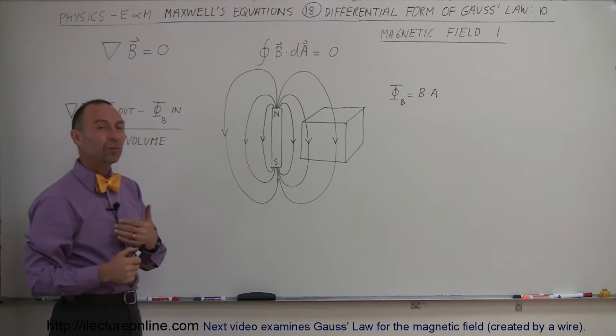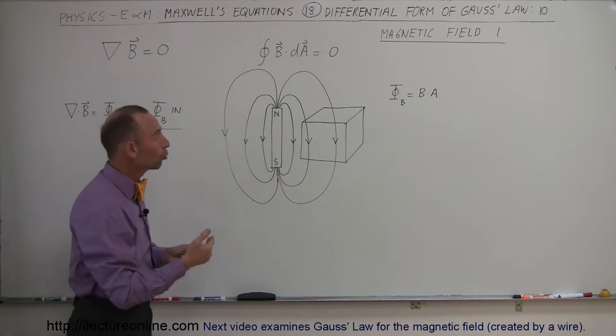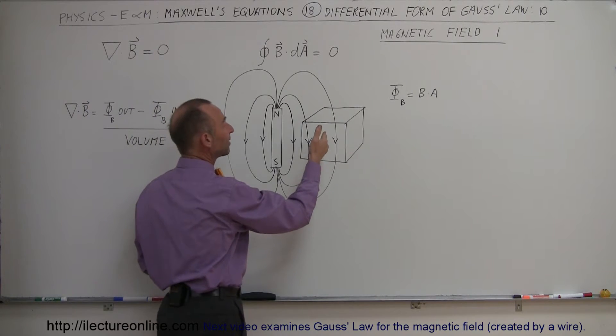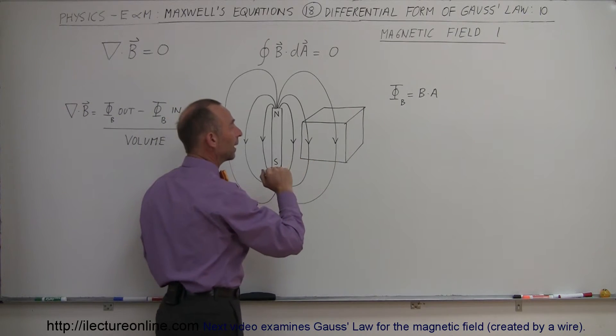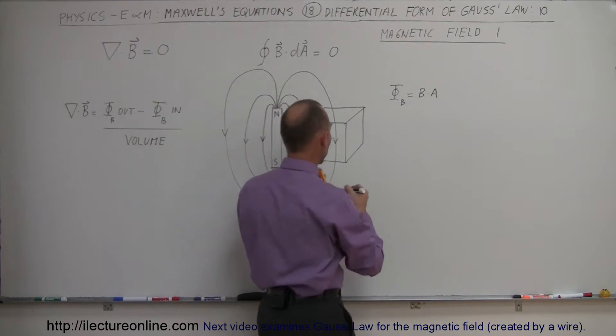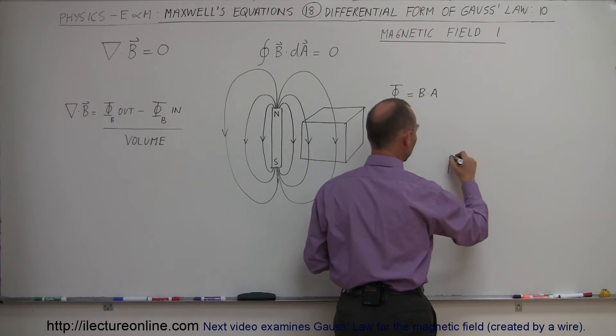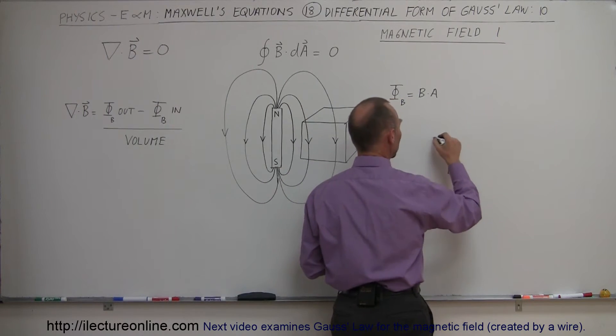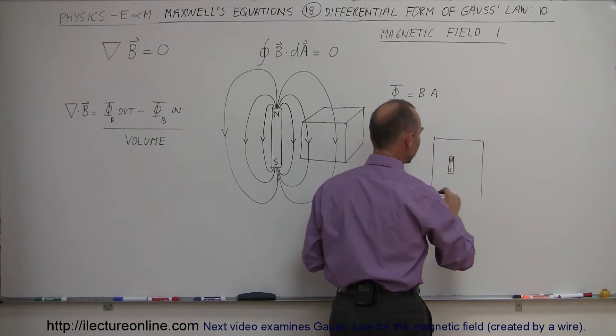That's kind of hard to understand why that would be zero. One of the ways in which they try to explain this is that there's no source of magnetic field lines inside the cube. For example, if we take this magnet, so let's say we have a north pole and a south pole like this, and we draw a Gaussian surface around it.